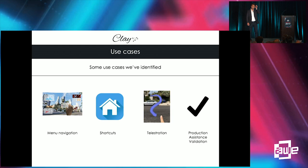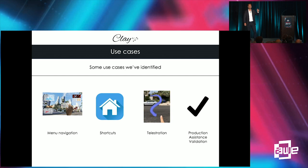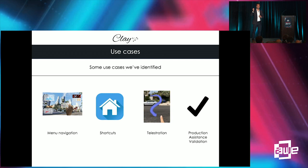Here are some use cases from conversations with companies we work with. Basic menu navigation — going from a home screen to a particular app. Shortcuts — returning to the home screen or quick shortcuts within a device. Telestration is more enterprise-focused: in a see-what-I-see scenario, someone at a manufacturing facility can circle a part in their field of view to communicate more easily. In manufacturing, AR devices are used instructionally — gestures can validate that you've completed a step before moving on.